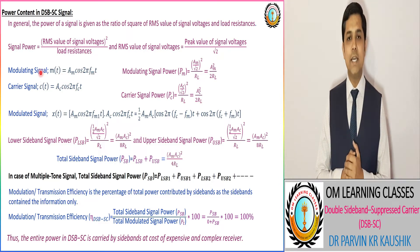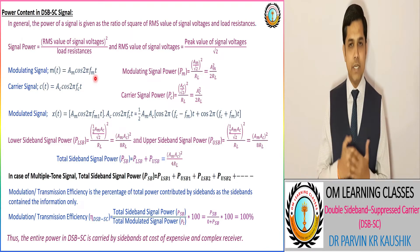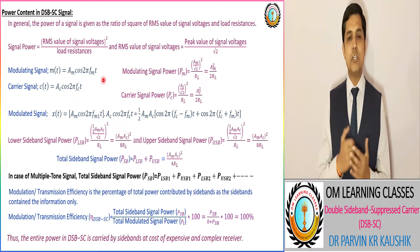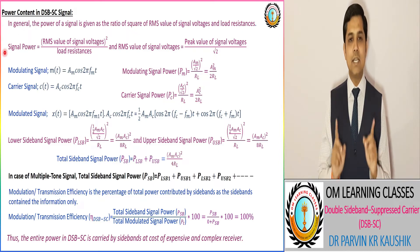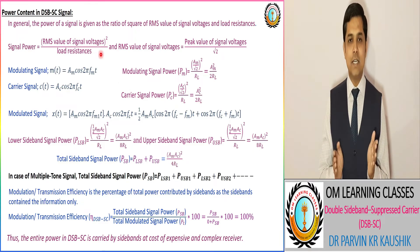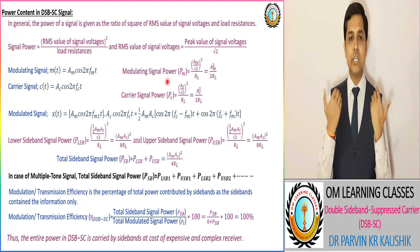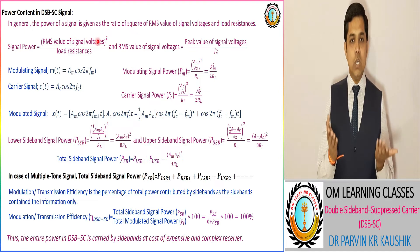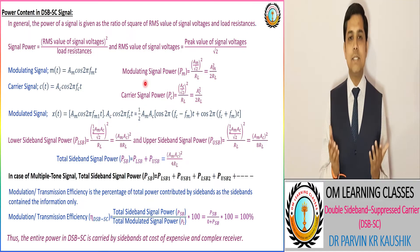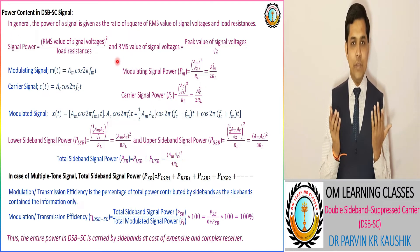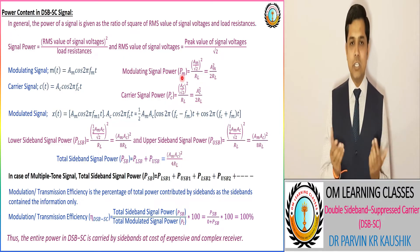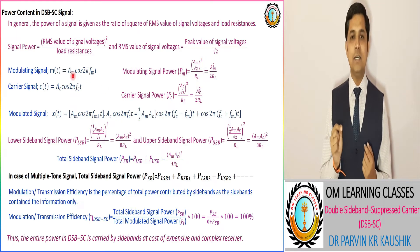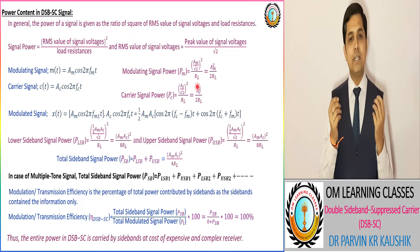As per our DSB-C example taken in lecture number 10, we consider the modulating signal m(t) = Am. As per the mathematical representation of signal power — if the signal amplitude does not go to zero as time approaches infinity — the signal power is defined as the ratio of the square of the RMS value of signal voltage to the load resistance.